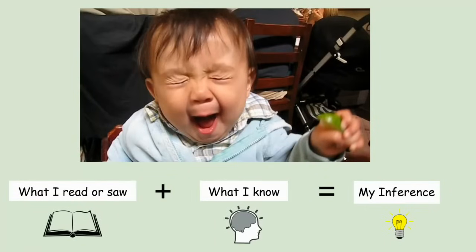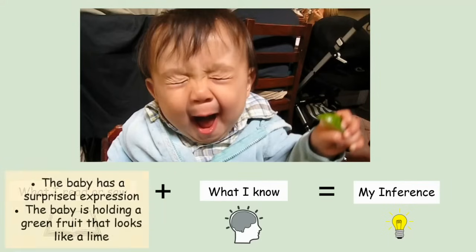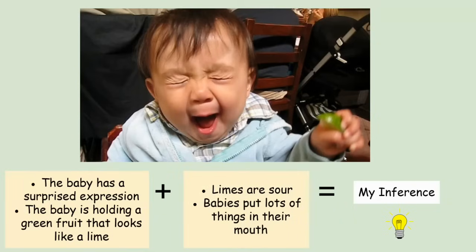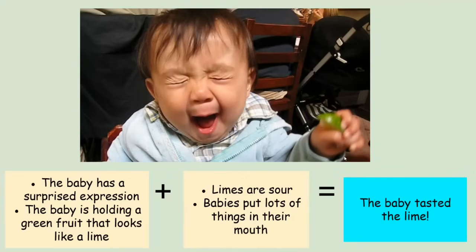Let's try it again. This time we're going to think about what we read or see first. What I see is the baby has a surprised expression and the baby is holding a green fruit that looks like a lime. What I know is that limes are sour and babies put lots of things in their mouth. So my inference is that the baby tasted the lime.